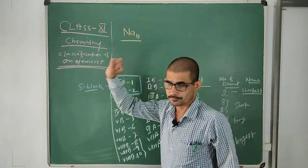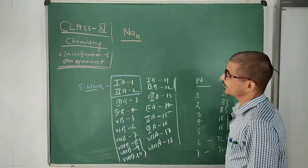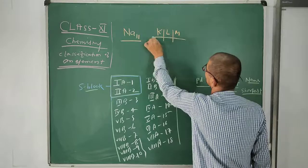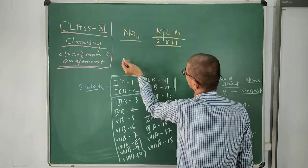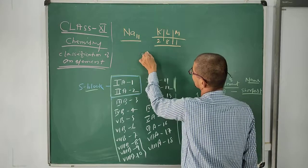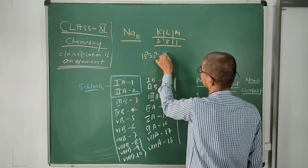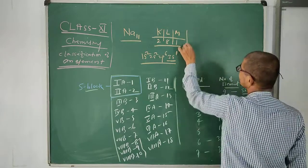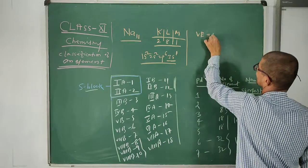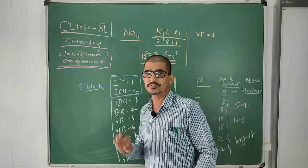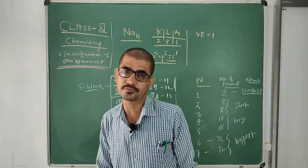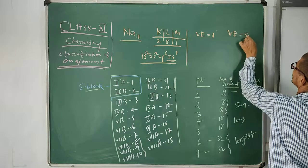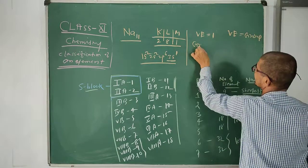What is the position of sodium in the modern periodic table? How can you calculate its position? First, write down the electronic configuration in both cases: 2, 8, 1 in terms of orbit, and 1s², 2s², 2p⁶, 3s¹ in terms of orbital. This is the outermost configuration. So valence electron equals 1. Valence electrons are the electrons present in the outermost orbit of an element. So valence electron equals group — that is why its group is 1.